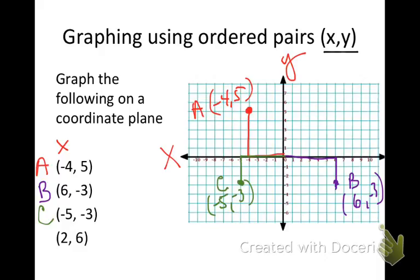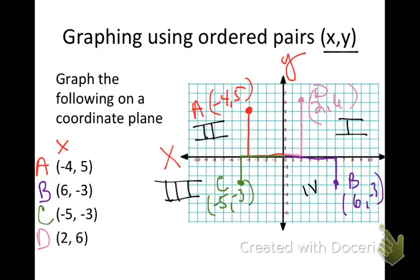My last point to graph is D. I'm going to go over to positive 2 and up to 6. I'll put my dot and label that D with the coordinates. Now, if I want to know which quadrant these are all in - starting upper right, that's 1, 2, 3, and 4. So A is in quadrant 2, B is in quadrant 4, C is in quadrant 3, and D is in quadrant 1. This should all be in your notebook. You don't have to use different colors, but if that helps, go right ahead.